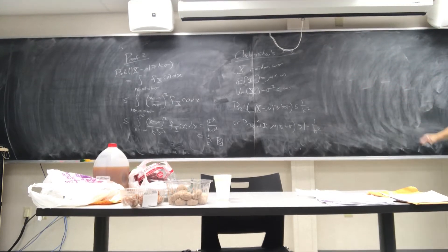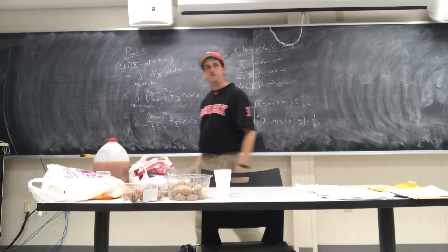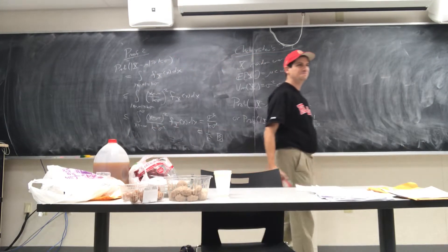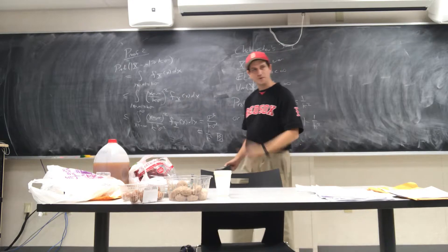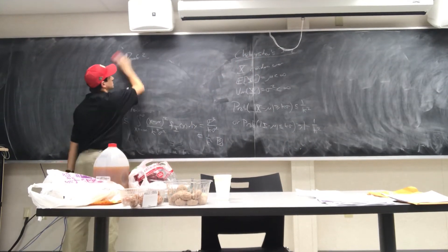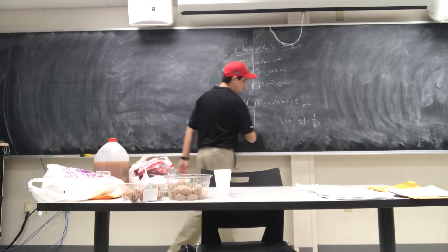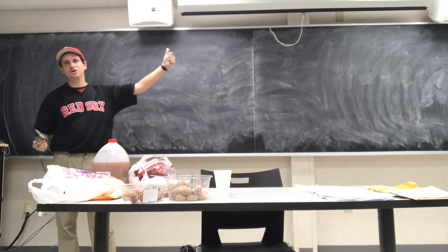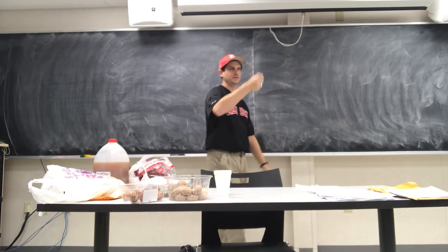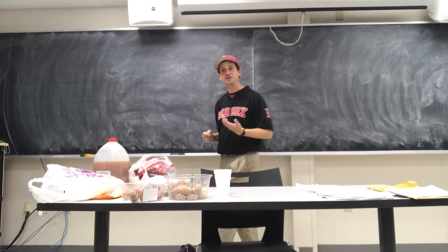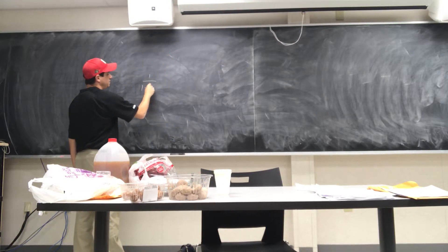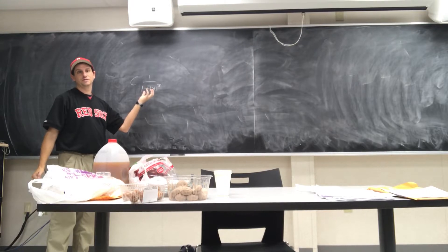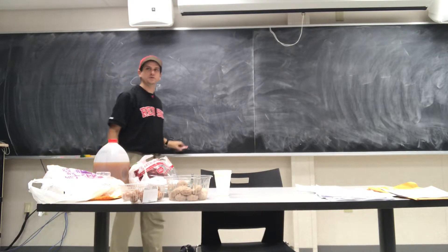Which does a better job, Markov or Chebyshev? Chebyshev, because it uses more information — the variance. If you use more information you should do better. But Markov has an advantage: you don't need the variance, and there are distributions that don't have a variance. For example, 1/(1 + |x|^3) with a normalization constant is a probability distribution that has a mean but no variance. Markov is more broadly applicable than Chebyshev, but when both exist, Chebyshev will almost always do better.